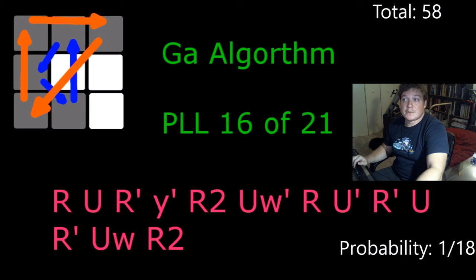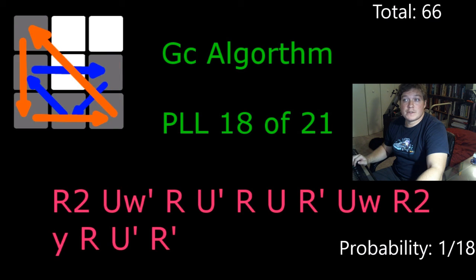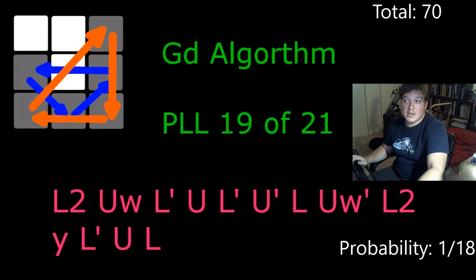GA algorithm, GB algorithm, GC algorithm, and GD algorithm. Four cases each, 70 total.